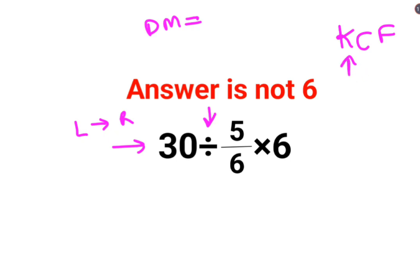Where K stands for keeping the first number as it is. C stands for changing the division sign to multiplication. F stands for flipping or taking reciprocal of 5 upon 6, which is 6 upon 5, and this is multiplied by 6.